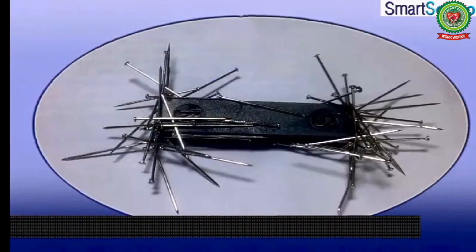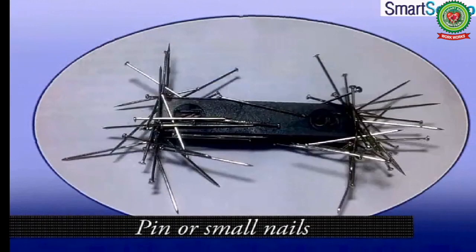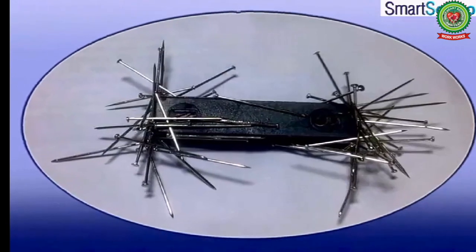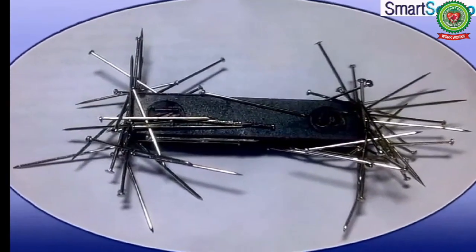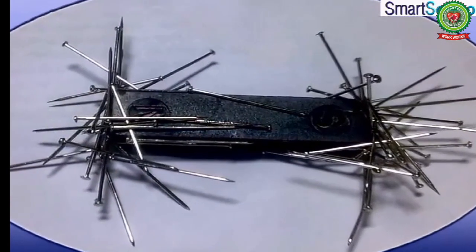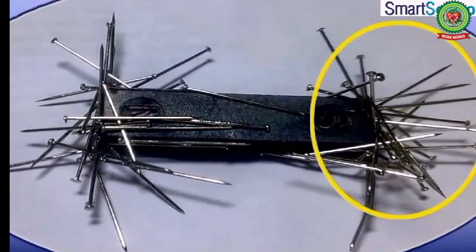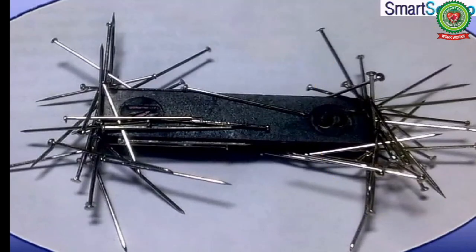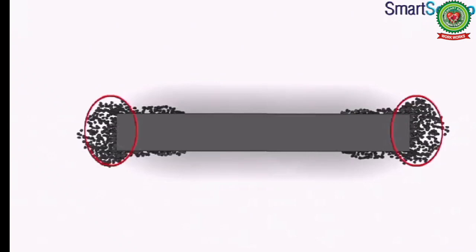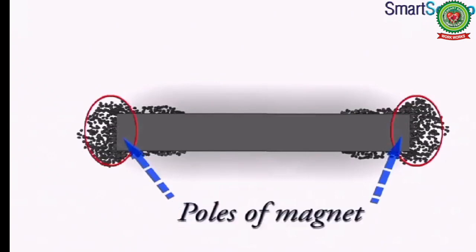Now repeat this activity with iron pins and small-sized iron nails in place of iron filings. The result is almost the same — the ends of the bar magnet attract more pins than any other part. The two ends, which are the regions of strong magnetic power, are called the poles of the magnet.